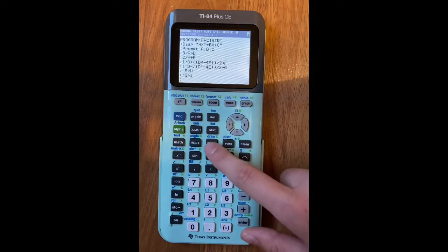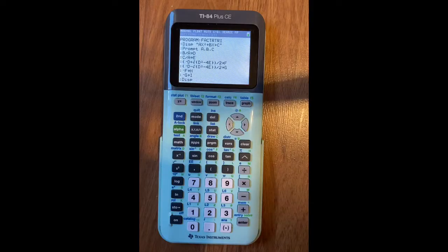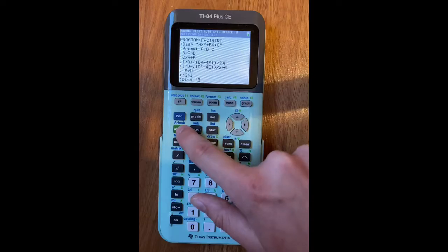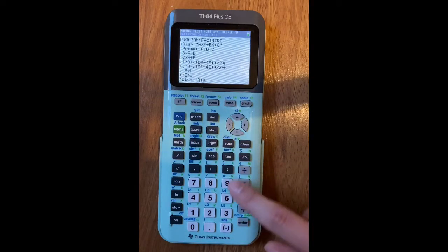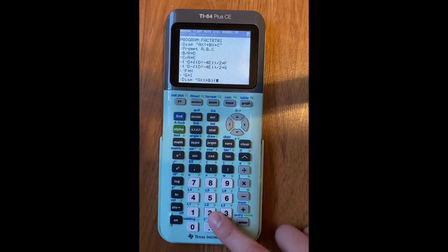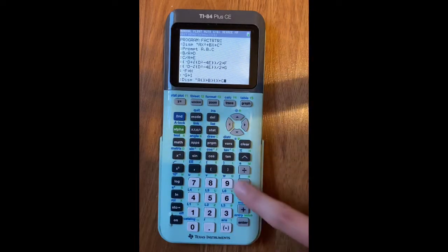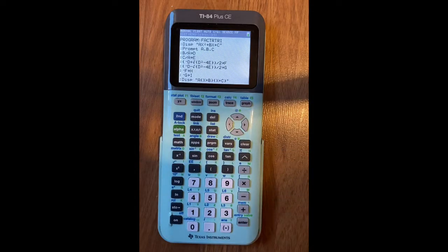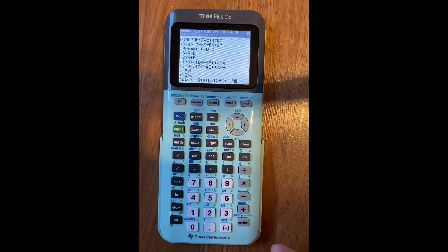Then you're going to go to program, go over once, and down to number 3 again. Display. You're going to do your quotation marks, and then press A, parenthesis, X plus B, close parenthesis, and then another parenthesis, X plus C, close parenthesis, and then another quotation marks. Then you're going to do a comma, and then do another set of quotations.